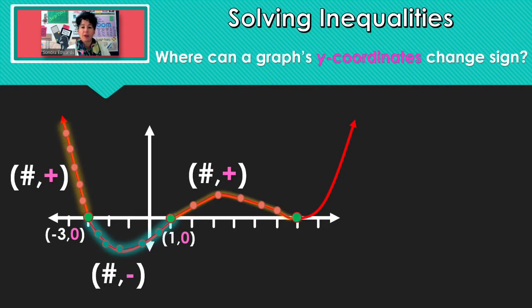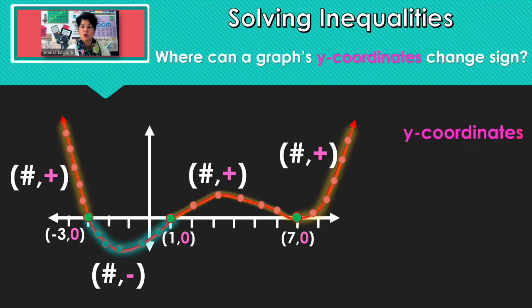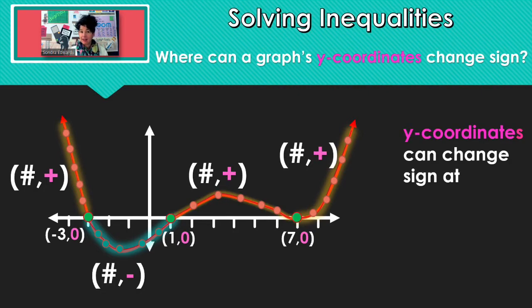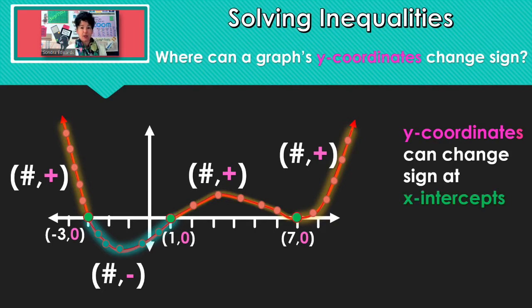There we have our third x-intercept, and that's located at seven comma zero. Continuing along, all the points along there, the y part of the coordinate would be positive. So the takeaway there is that the y-coordinate can change sign at an x-intercept.